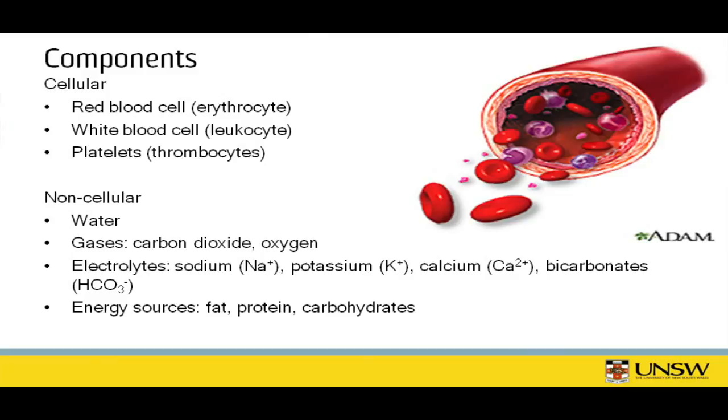In certain diseases, patients have a very high level of carbohydrates in the blood — we call this disease diabetes, where the individual has a high glucose level. The blood also carries waste products produced by tissue beds and organs so that they can be excreted. For example, ammonia or ammonium is produced by cells using up nutrients and must be excreted by the kidneys. There are also clotting factors within the bloodstream involved in the formation of thrombus so that we do not bleed to death.